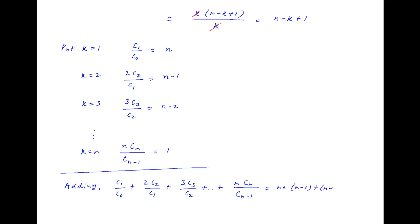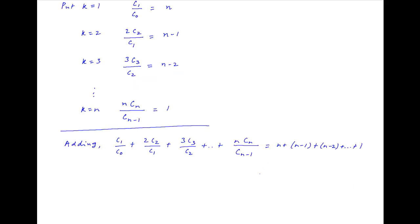And on the right hand side we have n plus n minus 1 plus n minus 2 plus and so on plus 1. The right hand side is the sum of the first n natural numbers, which is equal to n times n plus 1 upon 2, which is the required answer.